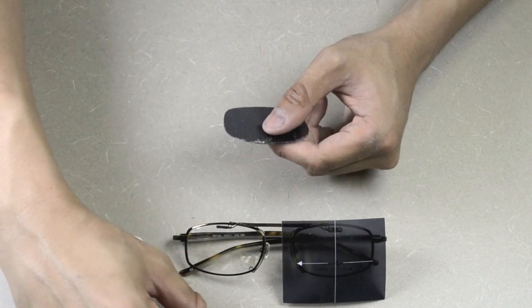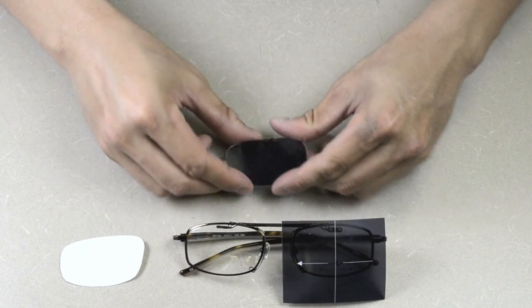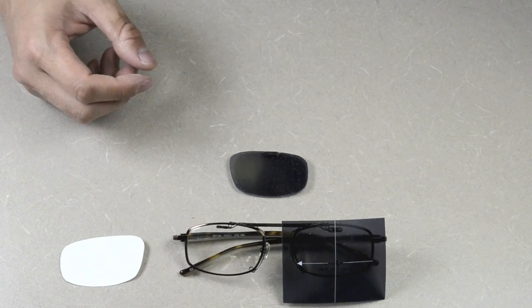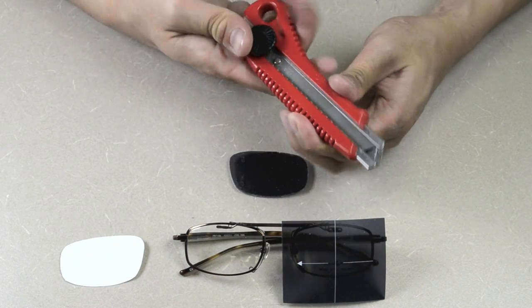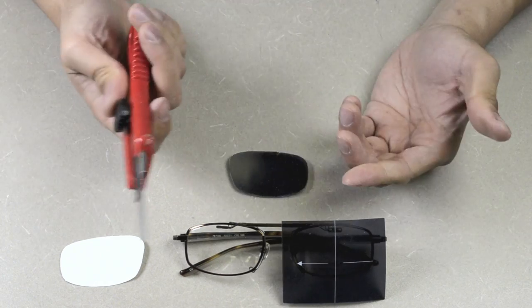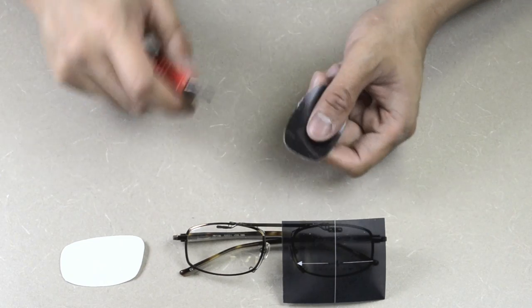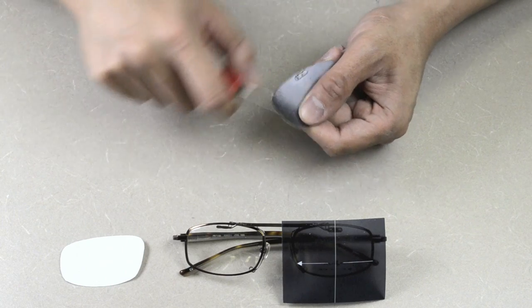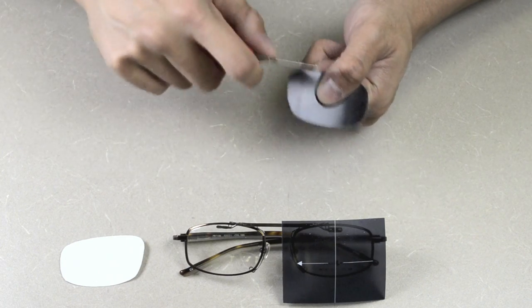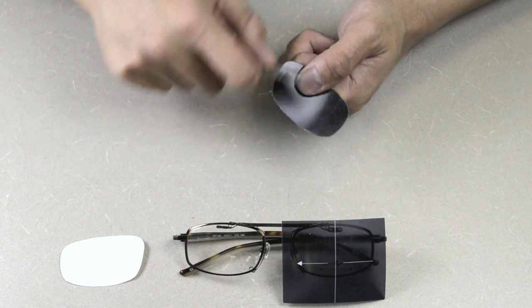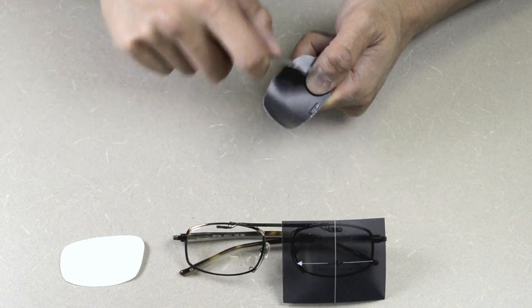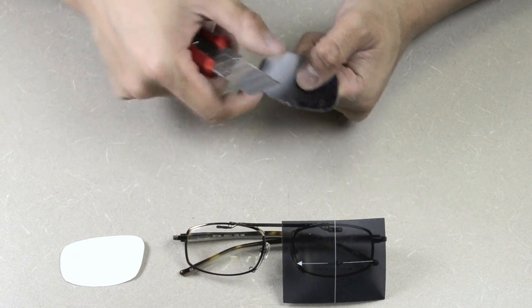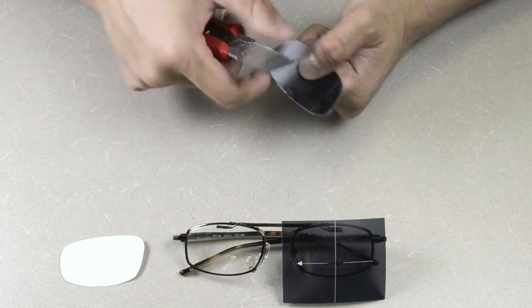Once we're finished with the actual filing, then we can take our X-Acto knife and this actually performs two functions. You're going to get rid of any excess left over from the actual filing, any excess dust left over. And also what it does is also give it a very fine little bit of a feather so that the edges on the actual lens aren't that sharp anymore. And so what I'm just doing now is going all the way around the lenses.